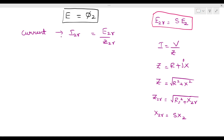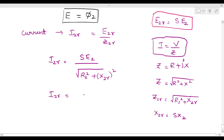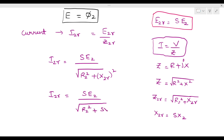Substituting these values, i₂r equals E₂r divided by Z₂r, similar to i equals V divided by Z. So i₂r equals s·E₂ divided by square root of (R₂² plus (sX₂)²) whole square. Therefore i₂r equals s·E₂ divided by square root of R₂² plus (sX₂)² whole square.